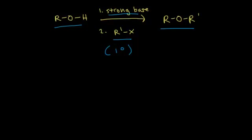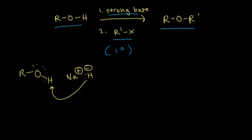Let's look at the mechanism for the Williamson ether synthesis, where you start with your alcohol. We know that alcohols can function as weak acids, so if you react an alcohol with a strong base like sodium hydride, the hydride portion functions as a strong base. This lone pair of electrons takes that proton, kicking these electrons off onto the oxygen. The product of that acid-base reaction is an oxygen with three lone pairs of electrons, giving it a negative one formal charge — we call that an alkoxide anion, which interacts with the positively charged sodium ion through electrostatic or ionic interaction.